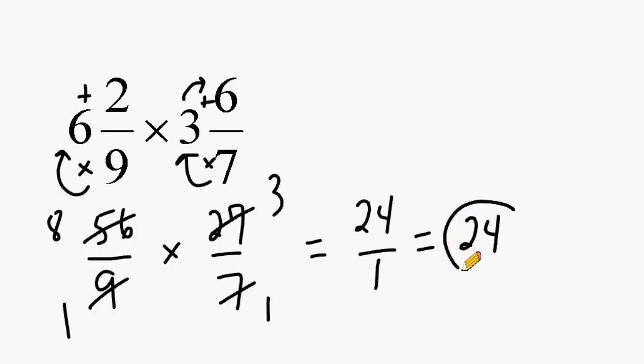That matches the estimate we came up with before multiplying. So when multiplying fractions, remember: you may only cancel one number at the top with one number at the bottom that share a common factor. With problems involving mixed numbers, you must rename those mixed numbers as improper fractions first, and then search for a numerator and denominator that share common factors to cancel out.